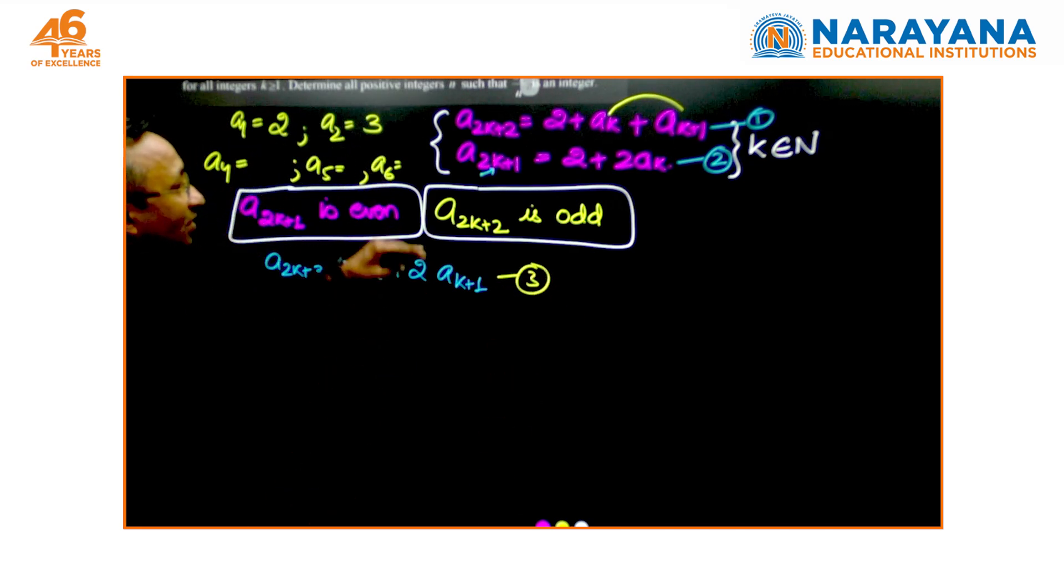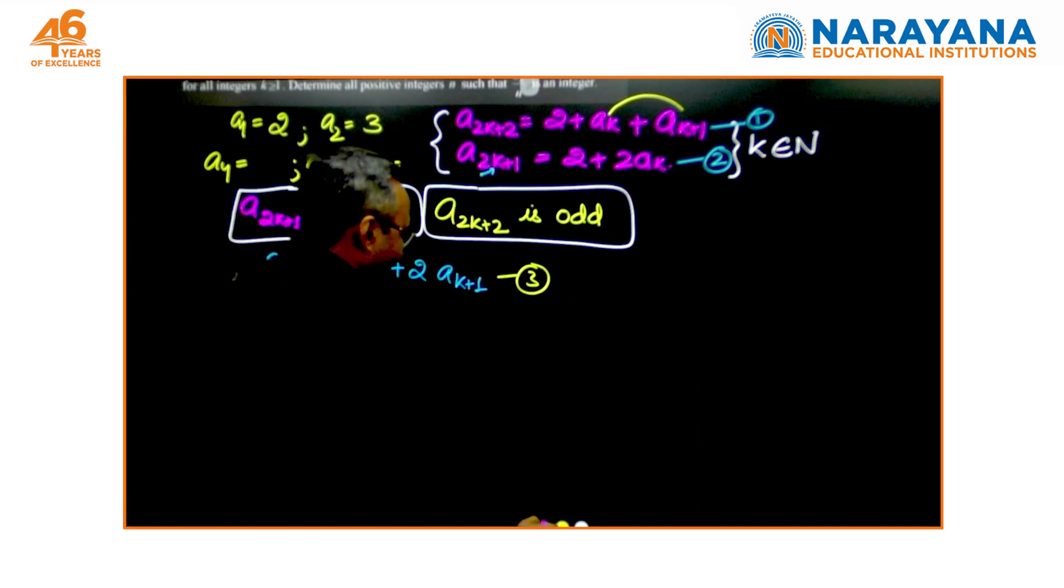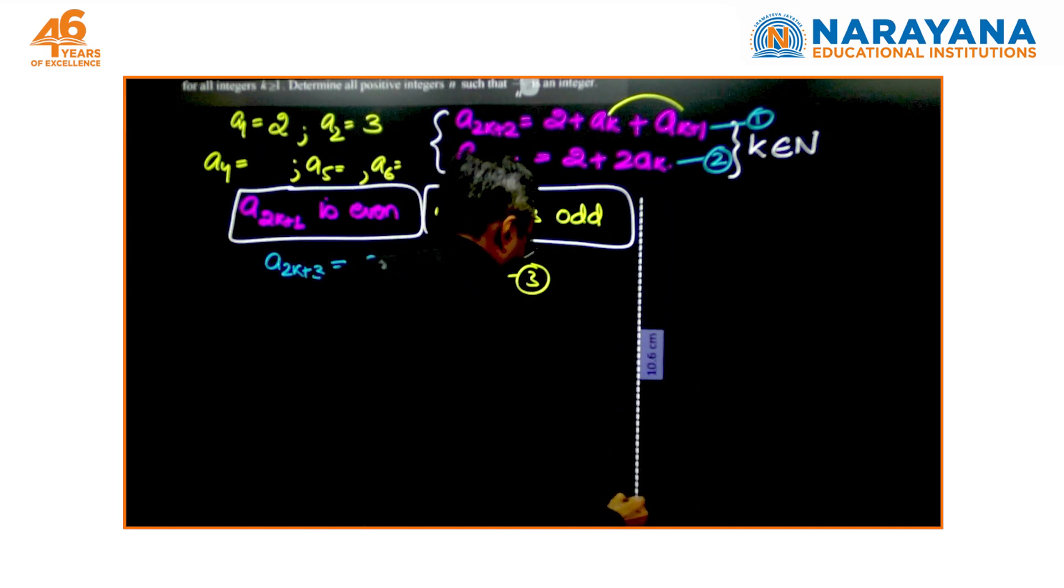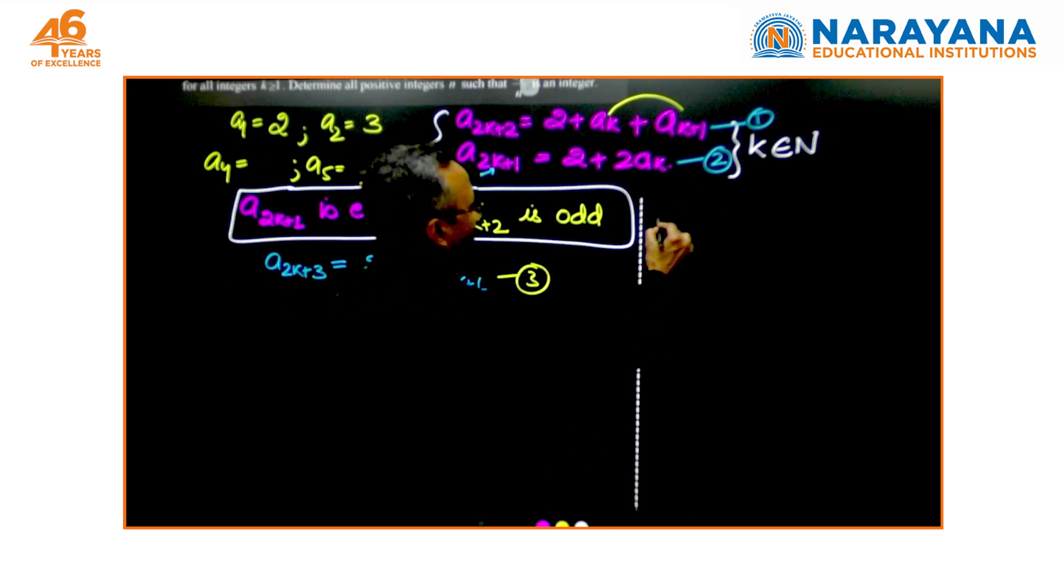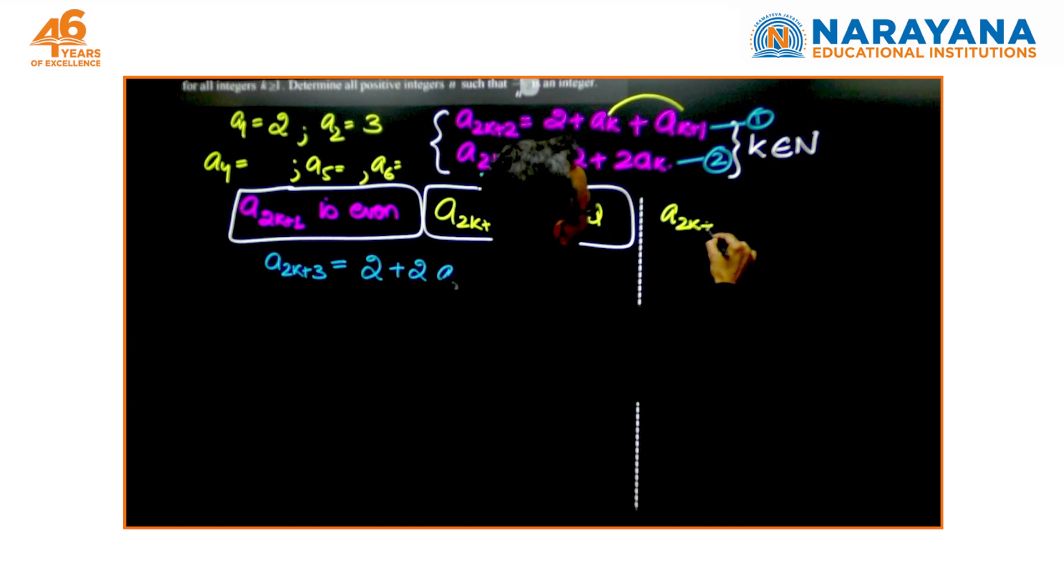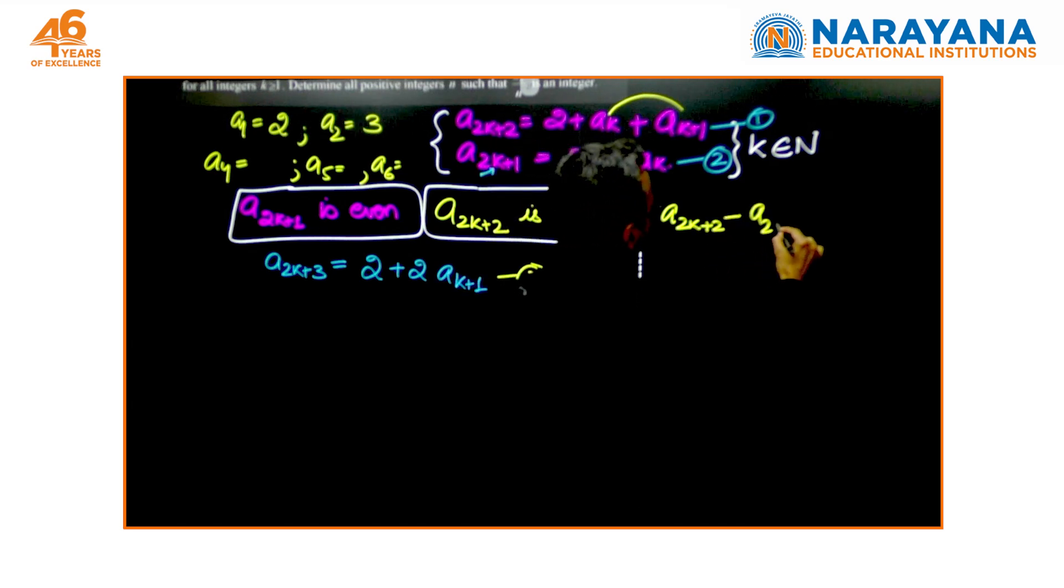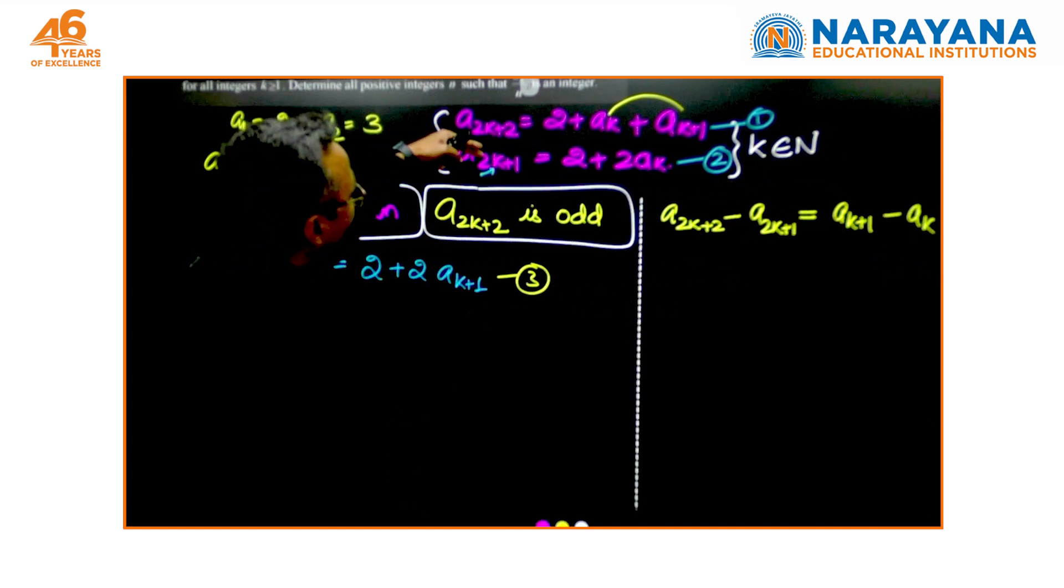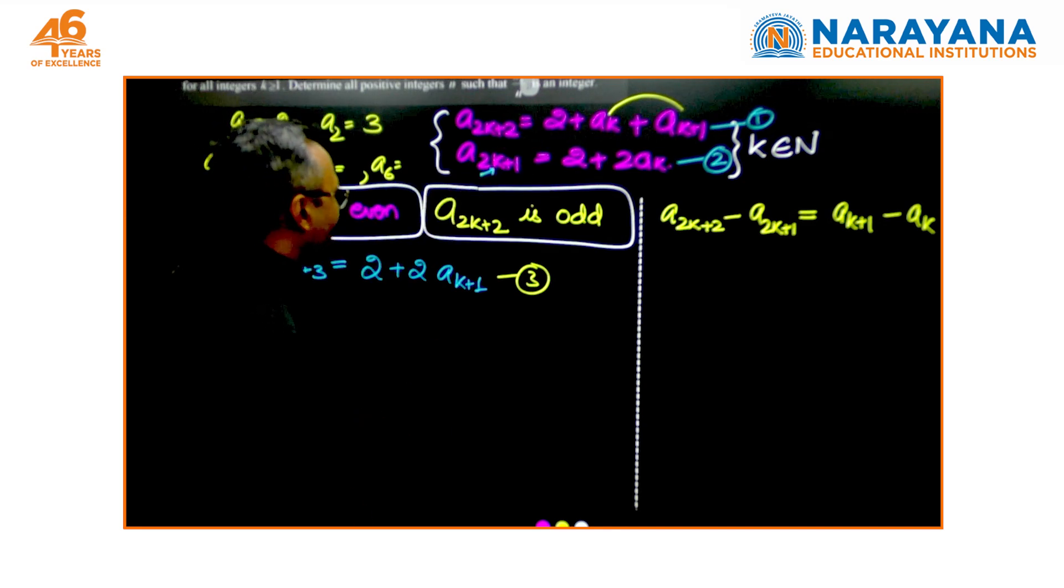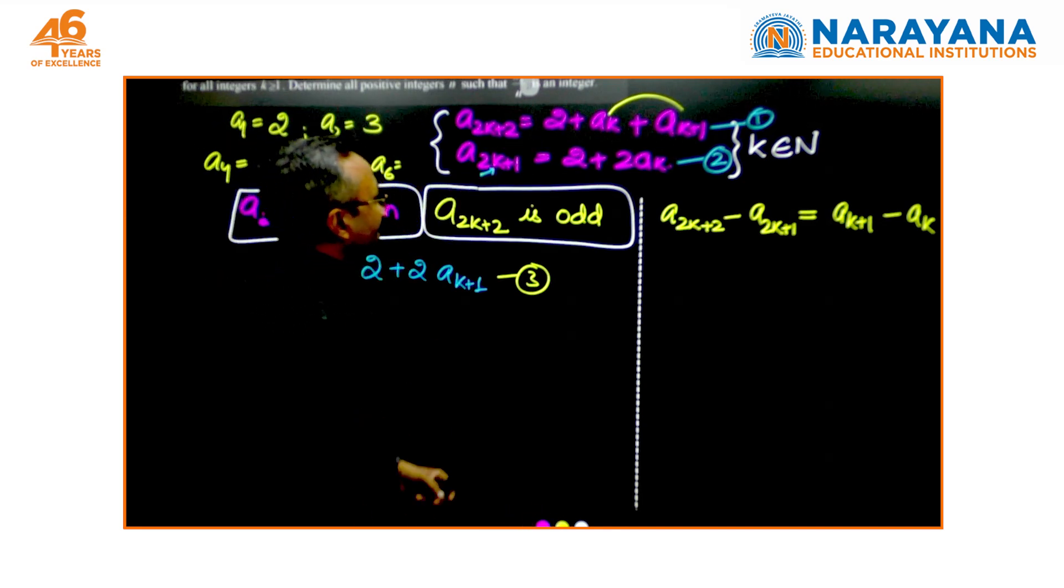Now, if you realize when you subtract—let me create some space here—when you subtract 2 from 1 or 1 from 2, whichever way you go, you will get a result: a_{2k+2} minus a_{2k+1} equals—your 2 gets cancelled with 2 and you are left with a_{k+1} minus a_k. Let us see if we have gone the right way. Yes, a_{2k+2}, 2 gets cancelled with 2 minus a_k.